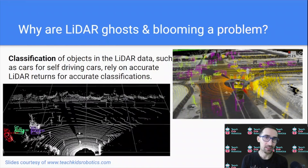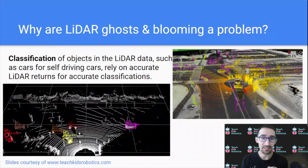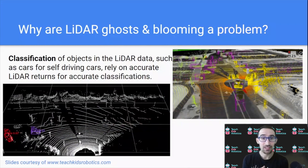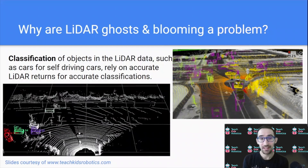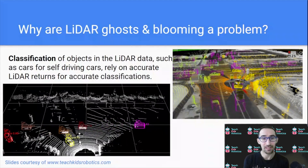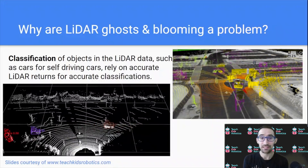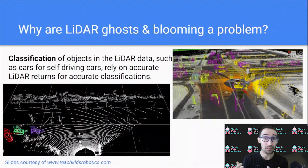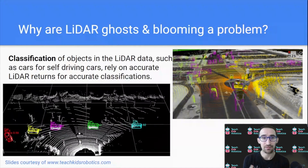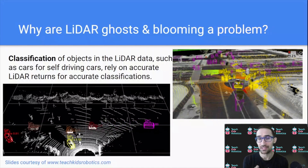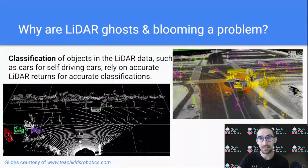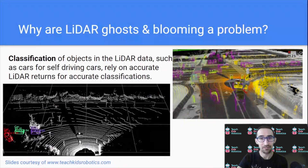Why are LiDAR ghosts and blooming a problem? Robot systems like autonomous driving cars rely on these sensors to understand the world around them. If we have something like blooming or a ghost, the sensor feeds data that doesn't reflect the real world but reflects a problem with the sensor. This can result in detecting an object in front of the car when it actually isn't — like the LiDAR ghosts from the stop sign — or misclassifying shapes, such as thinking you see a car when it's actually the result of blooming changing an existing shape. The issue really comes down to accurate classifications and understanding of the environment.